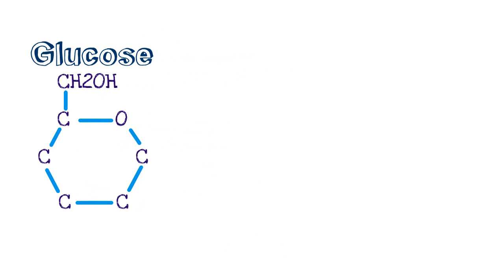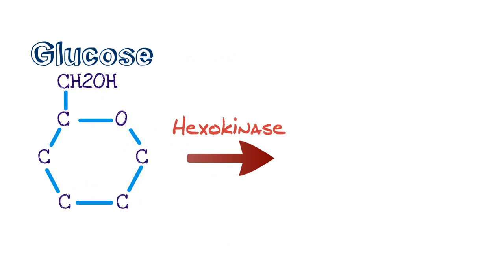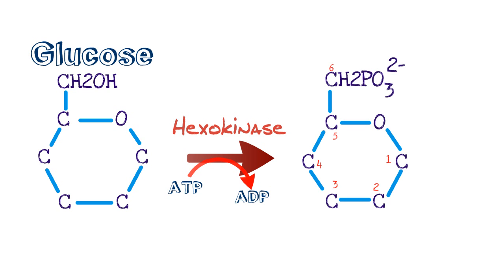The first step of glycolysis — and one of the most important steps — is the reaction facilitated by hexokinase. Anytime you hear the word kinase, realize that this enzyme works on phosphate groups, either adding or removing a phosphate group. It utilizes ATP, adenosine triphosphate — adenosine with three phosphates. Energy is stored in those phosphate bonds. ATP comes in, donates a phosphate group, and becomes ADP, two phosphates, donating energy as well. Hexokinase facilitates this, adding a phosphate group at the sixth carbon of glucose.